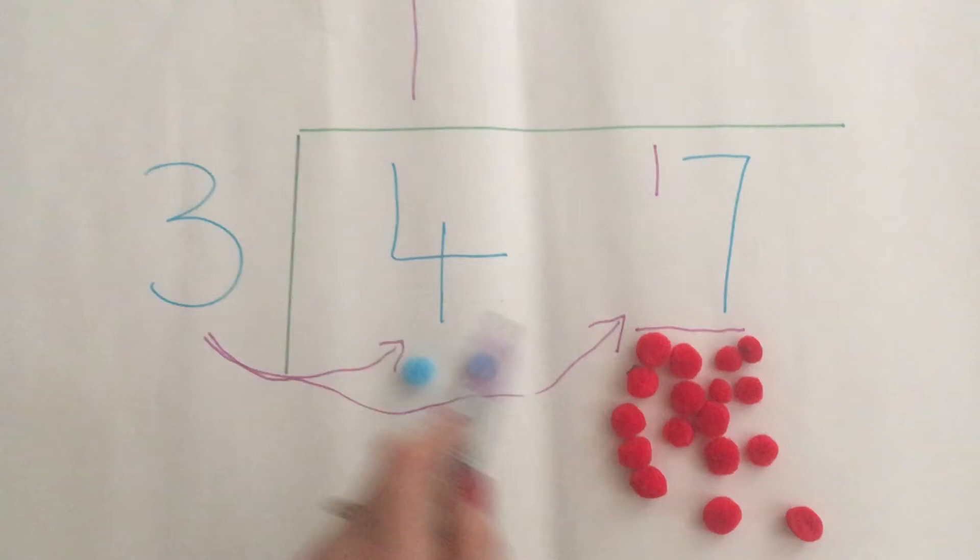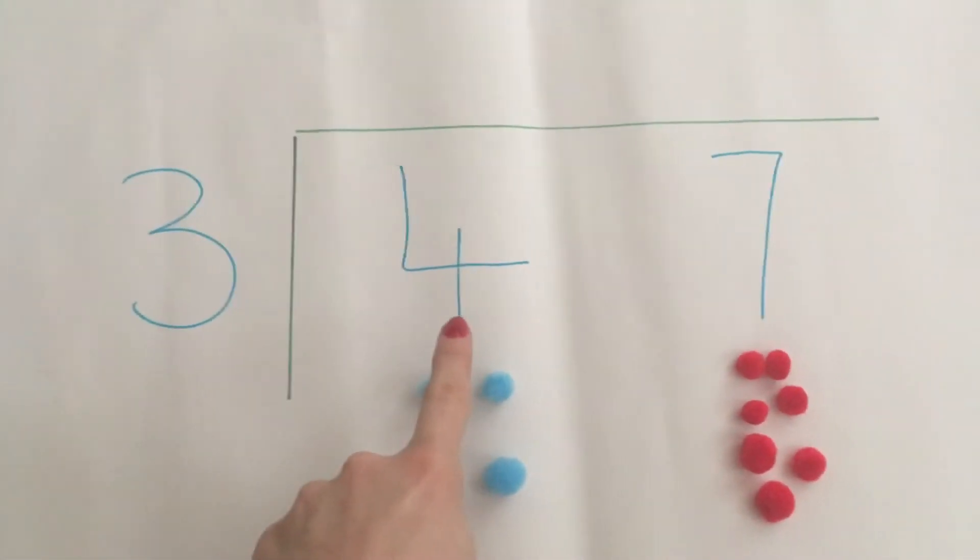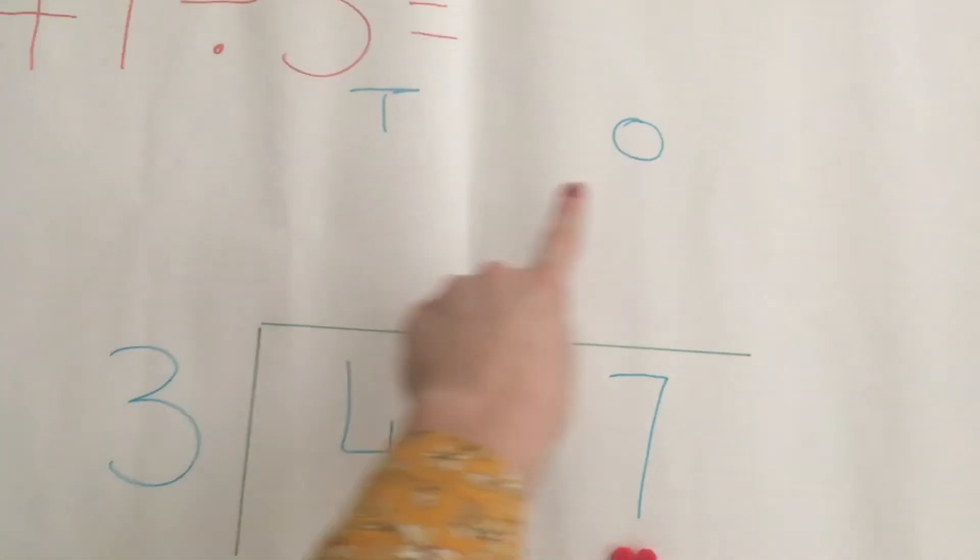So I'm going to do the number sentence 47 divided by 3. So I need to find out how many threes go into 47.